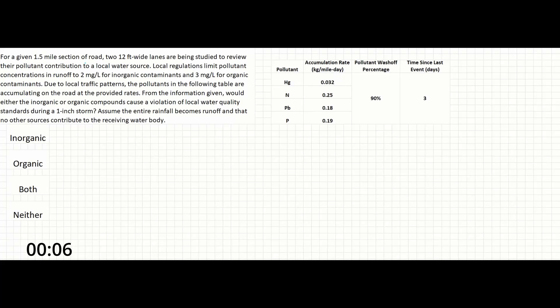For a given 1.5 mile section of road, two 12 foot wide lanes are being studied to review their pollutant contribution to a local water source. Local regulations limit pollutant concentrations to 2 milligrams per liter for inorganic contaminants and 3 milligrams per liter for organic contaminants.